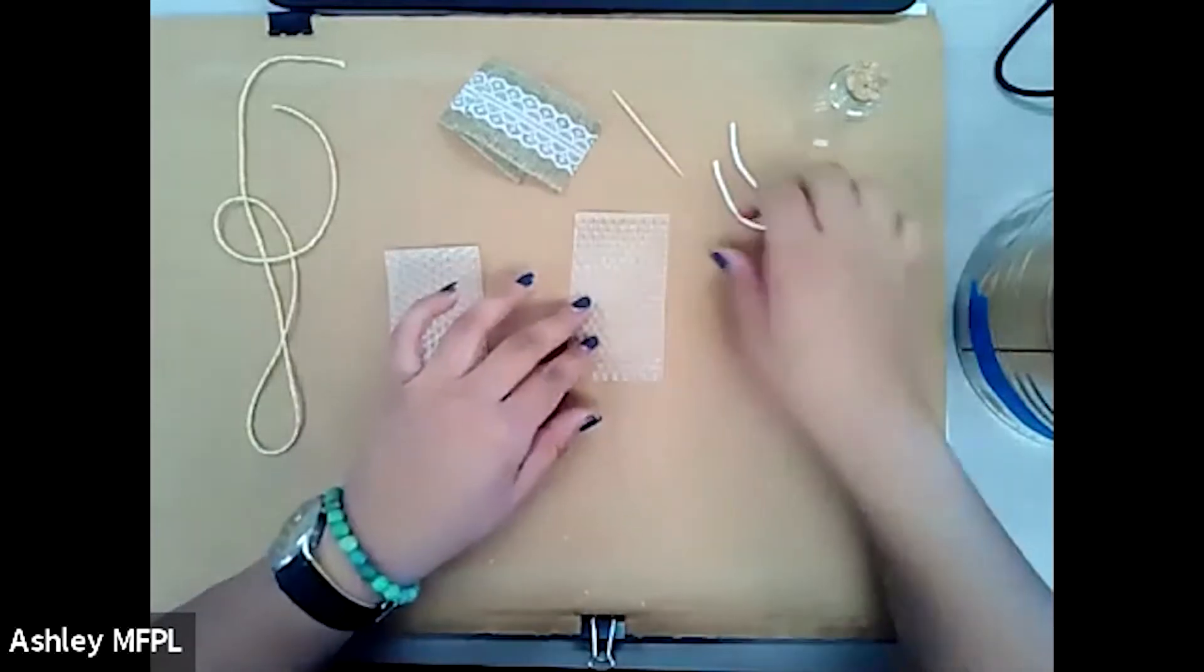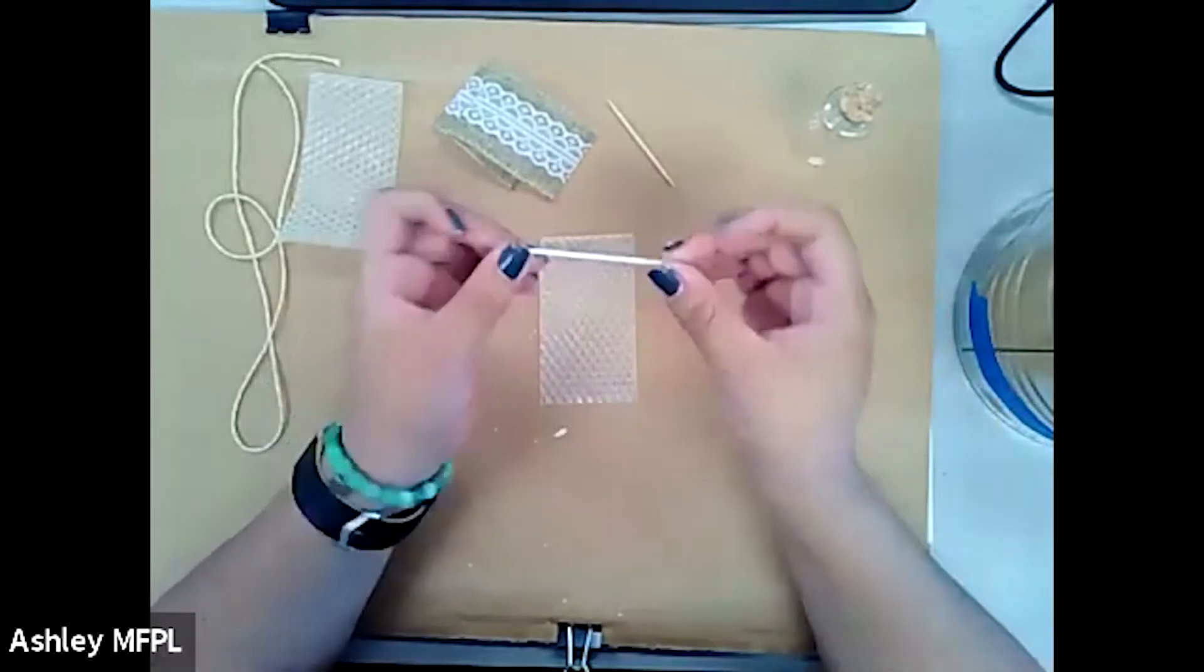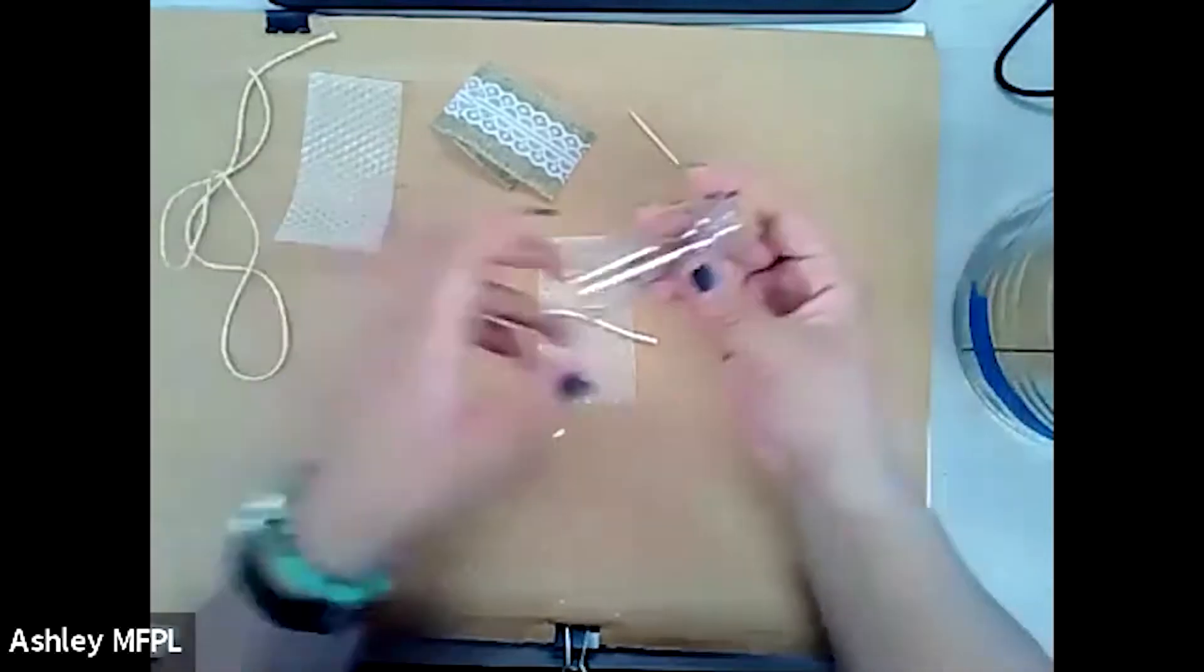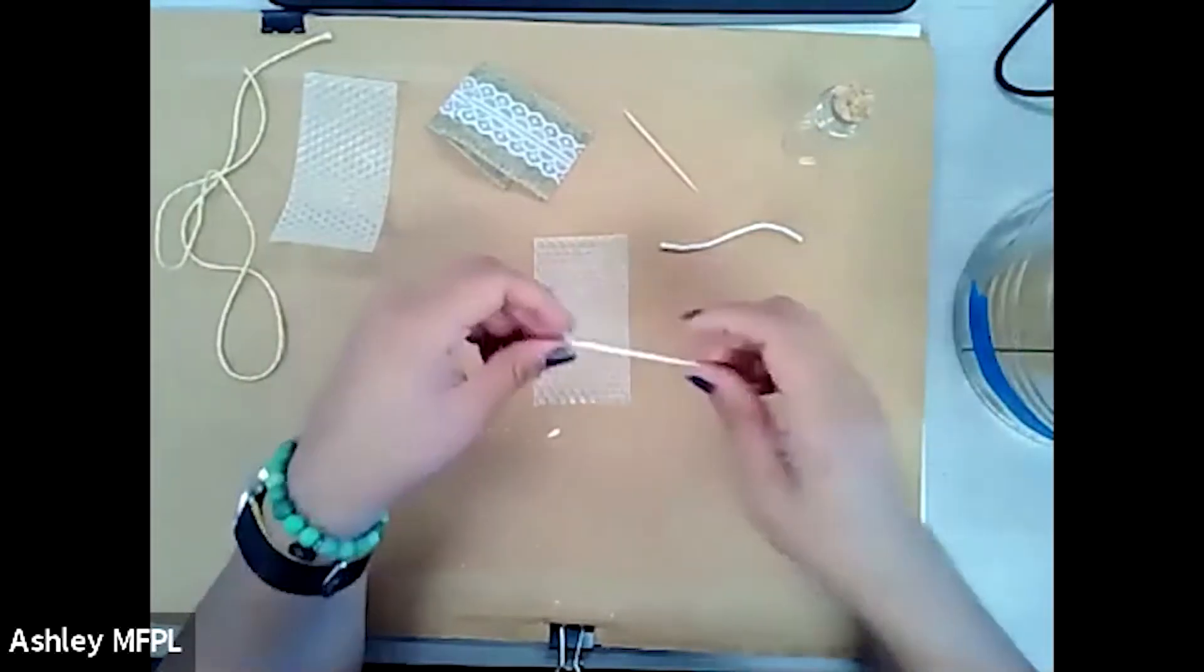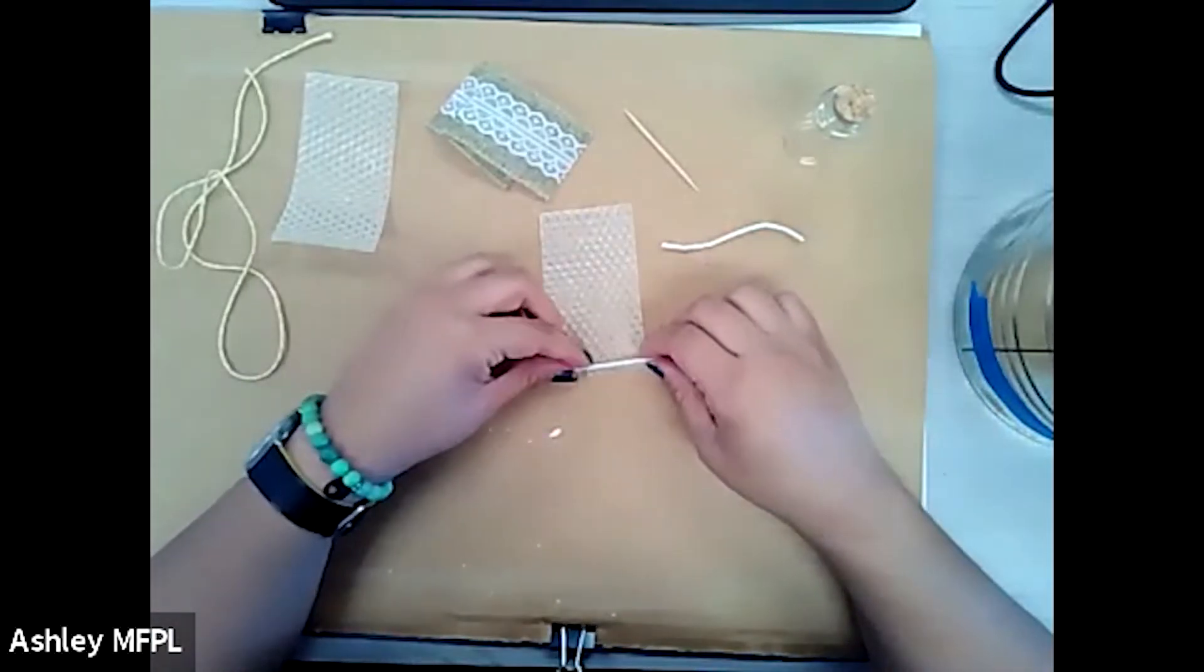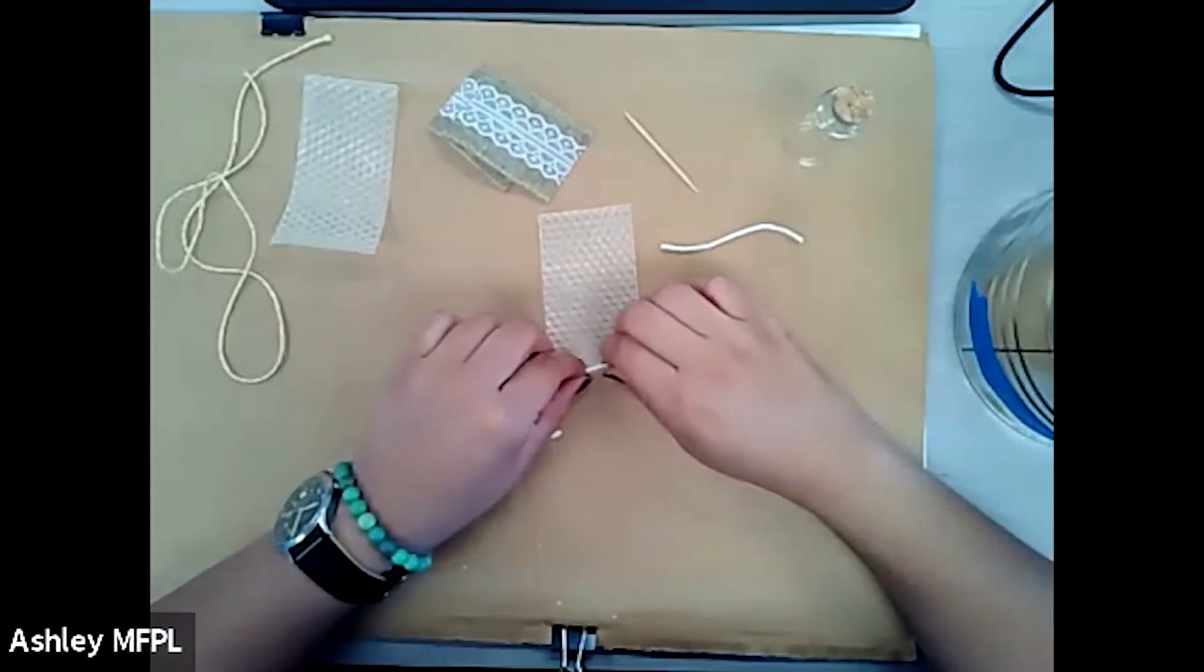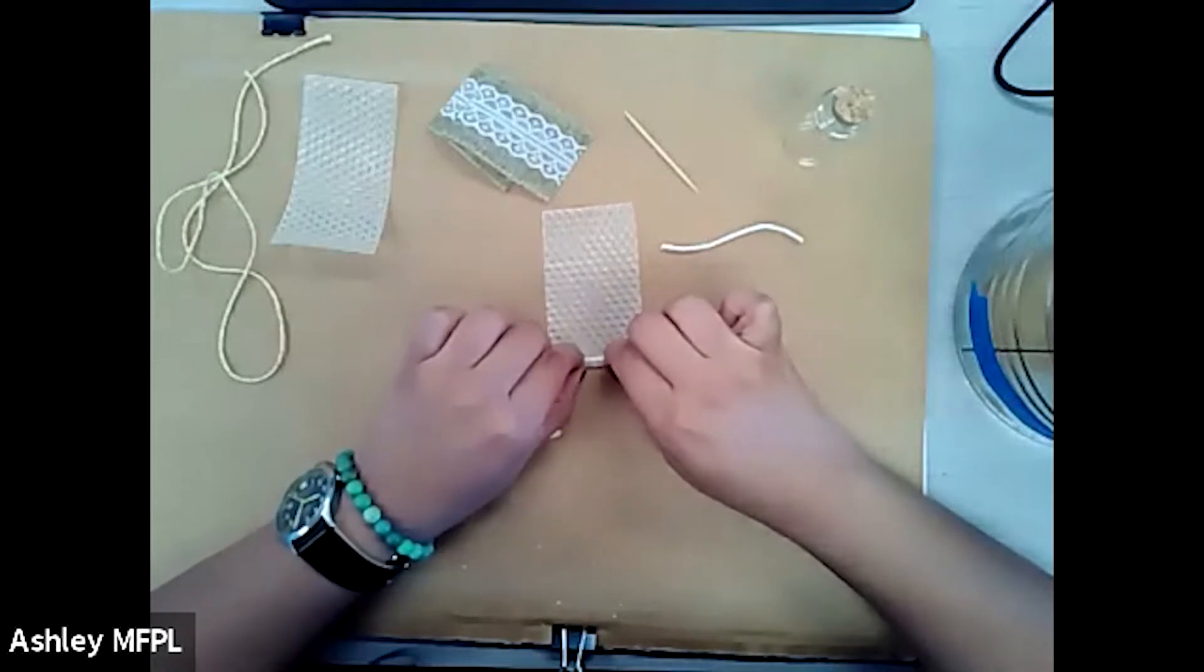These are super easy to do. You have the one sheet, one piece of wick, a toothpick, some twine, and these little cork jars. So the first step is taking your wick and just lining it up as close to the edge as you can. And then you're going to carefully lift it up and just really start rolling.